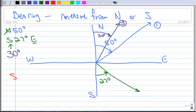And we've got one that's south, 75 degrees west. So we're going to start with south. So here's south. We're going to go 75 degrees west. So this angle right here is 75 degrees. And we have another one, don't we?